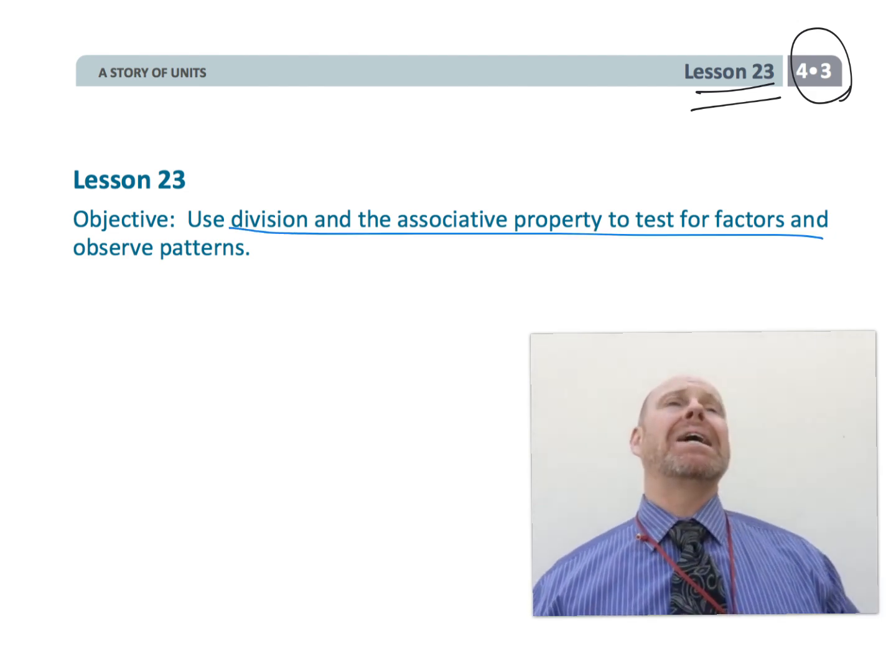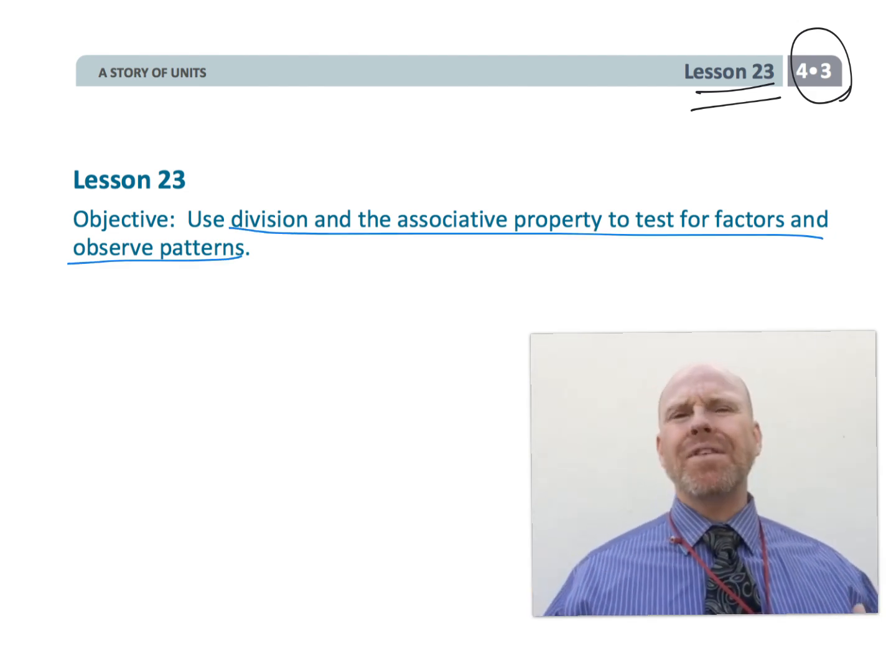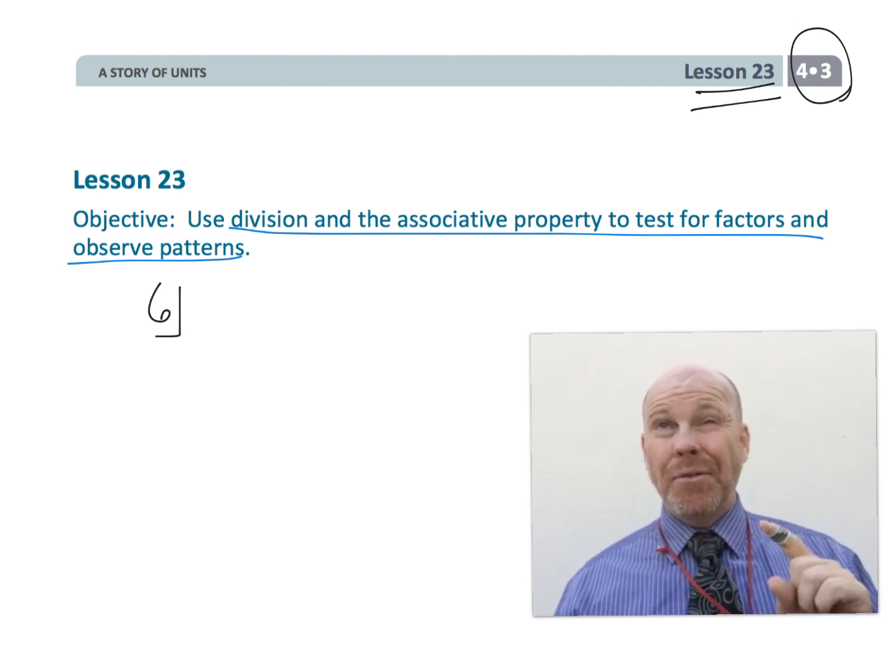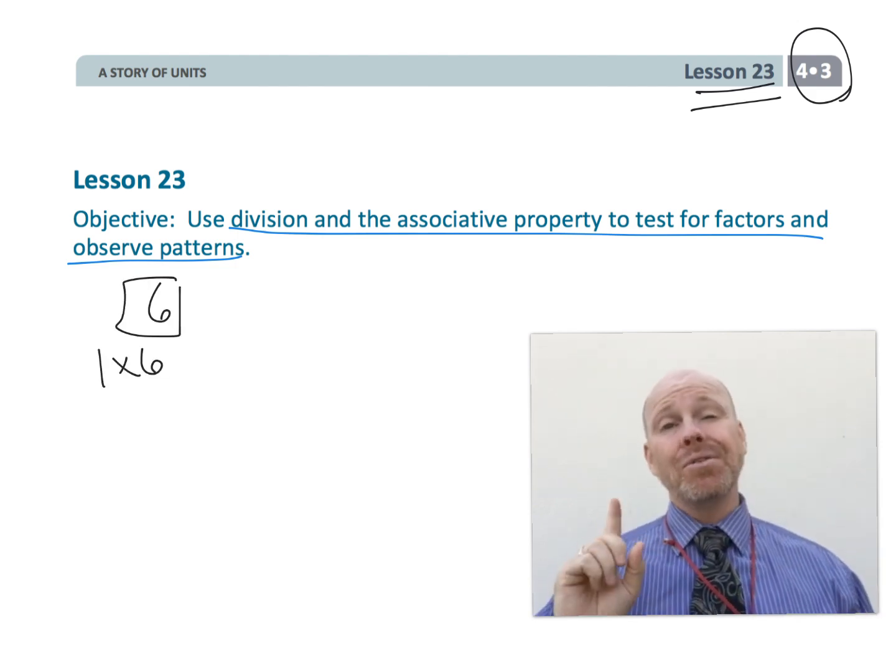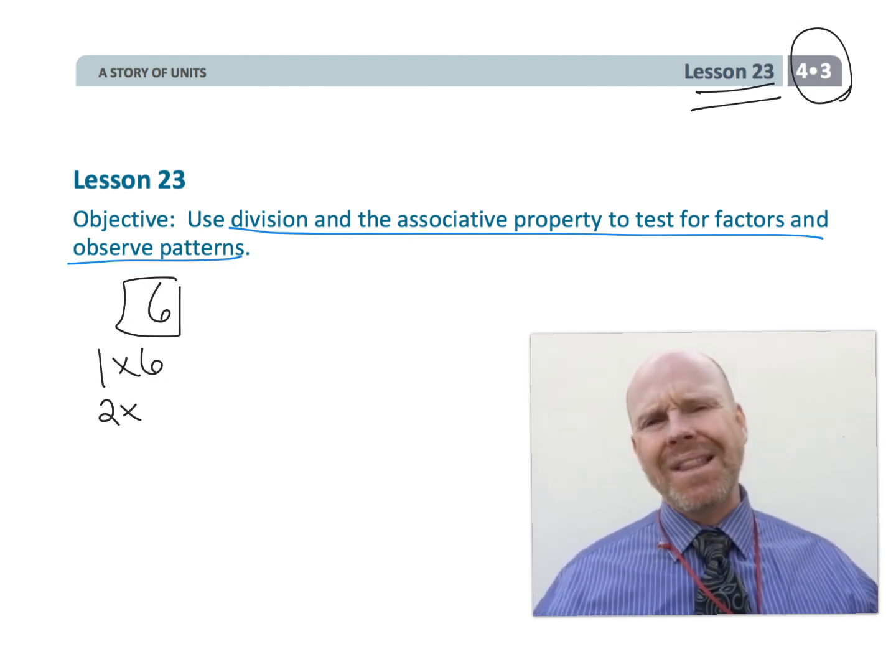So what does that mean? The idea would be, if we're looking for the factors of 6, that's going to be pretty easy. 1 times 6 is 6, 2 times 3 is 6. All right, that's pretty straightforward.